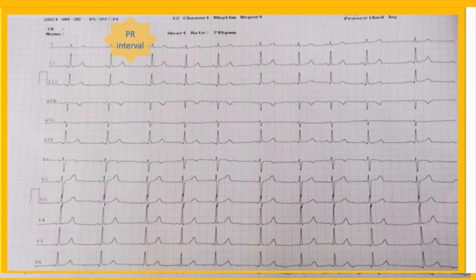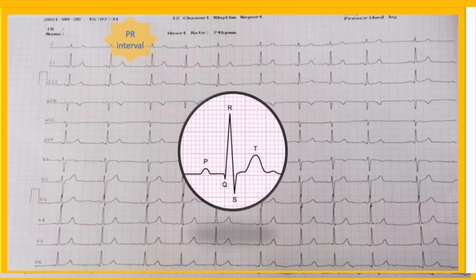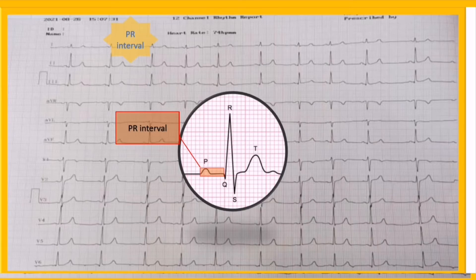The next step is PR interval. The PR interval includes the P wave and the PR segment. It extends from the beginning of the P wave until the first part of the QRS complex, and represents the period of time for atrial depolarization and conduction through the AV node and the His-Purkinje system.